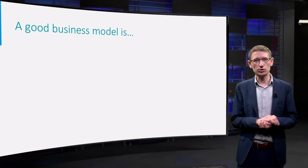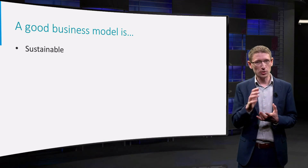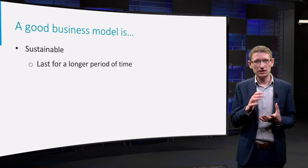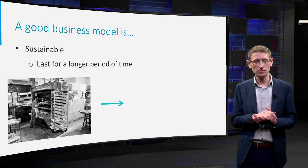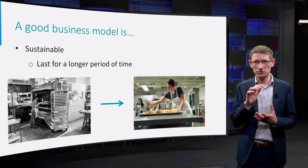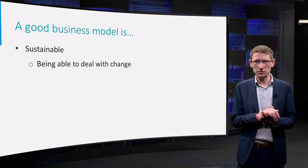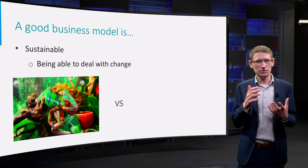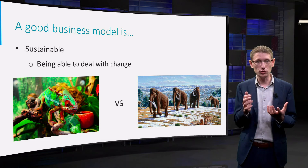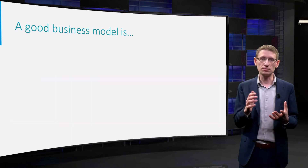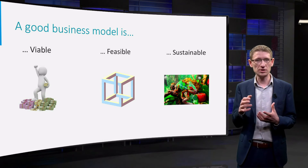Third, a good business model has to be sustainable. Most businesses are not in business for the short run. You want your business model to last for a longer period of time, and to deal with changing demand from customers, regulation, or new technology trends. A sustainable business model means that it is going to be feasible and viable in the long run. You will have to be able to adapt to change — be like a chameleon that adapts to its environment — or otherwise you might end up like a mammoth, unable to adapt to a new business climate. So viability, feasibility, and sustainability are all indicators for just how good your business model is.